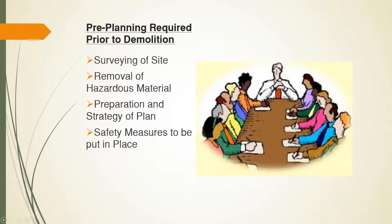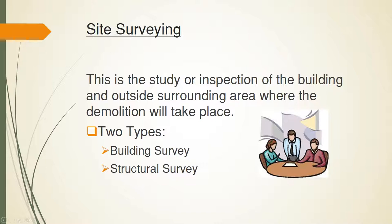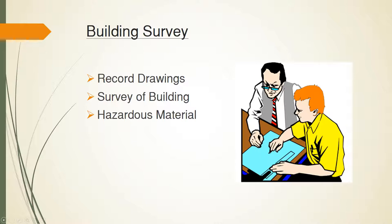A site survey is the study and inspection of the building to be demoed and its surrounding area. There are two types of site surveys: building surveys and structural surveys. A building survey consists of record drawings, a survey of the building, and identifying hazardous waste in the building and around its surrounding area. The record drawings identify the layout and configuration of the building and its adjacent areas, including a layout of walkways and streets. The building survey also covers what materials the building was originally constructed of, current site conditions, and rainwater and erosion considerations.